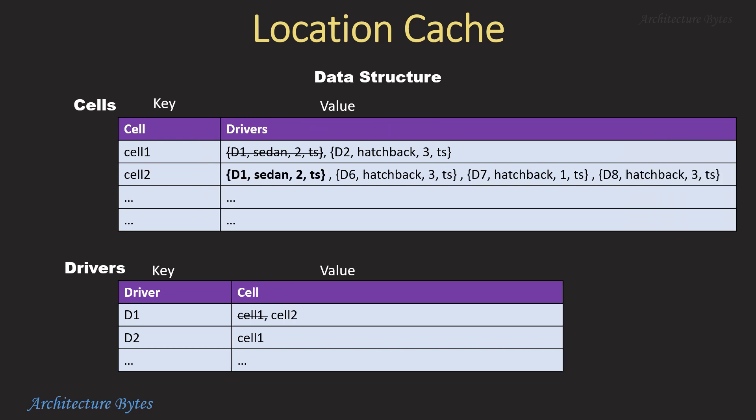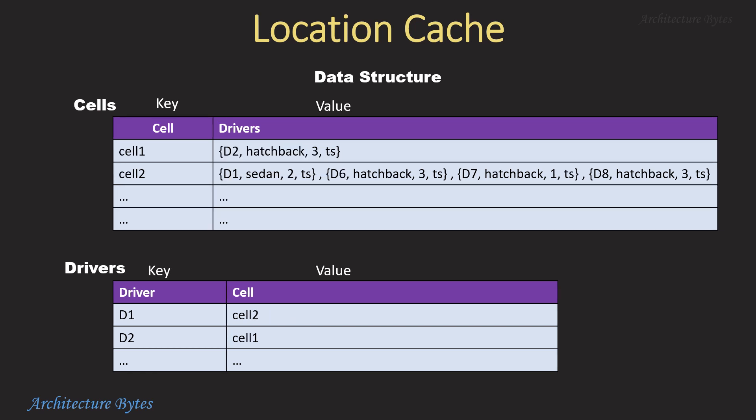As long as a driver is within a cell, everything is straightforward. But what happens when a driver moves from one cell to another? How do we find his previous cell so that he can be removed from it? There are a couple of ways to handle this — one way is that the driver always sends previous and current location; another way is to look up the driver's current cell first before proceeding with updates. There may be other ways to store and manage this information, but this should give you a good idea of how to go about it.